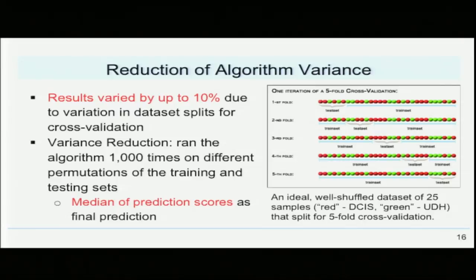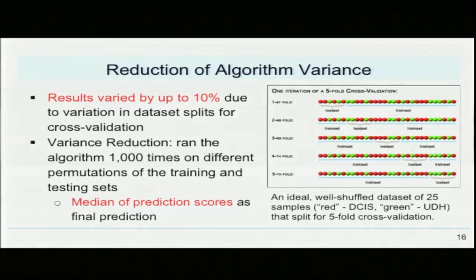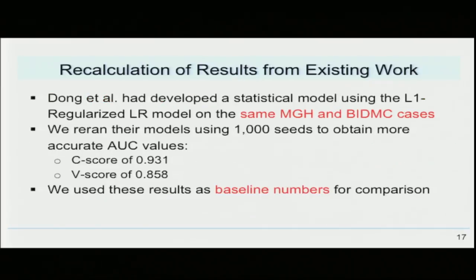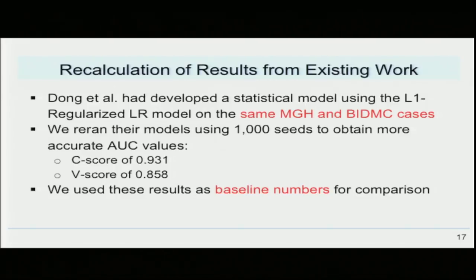Our first optimization technique was to reduce the algorithm variance. Studies often run their model once with a single random number generator, but we found that when that random number generator was changed, the results varied by up to 10%. To reduce this variance, we ran our algorithms 1,000 times with 1,000 random number generators, then used the median of the prediction scores to prevent outliers from skewing the final prediction. Re-running their model 1,000 times, Dong and others achieved a C score of 0.931 and a V score of 0.858, which we used as baseline numbers for comparison.